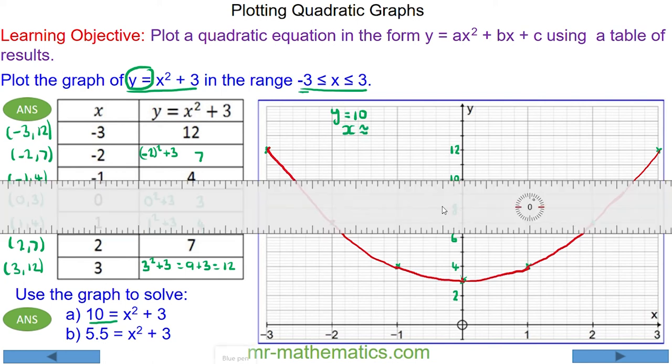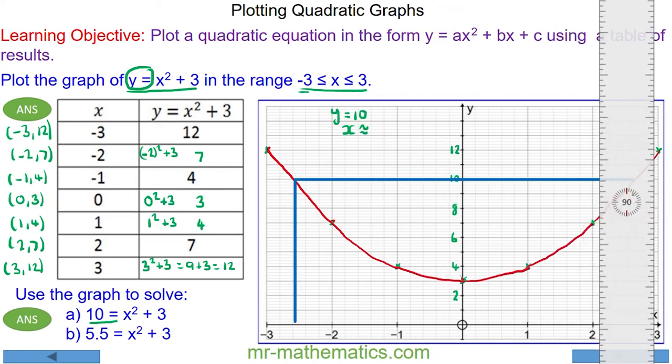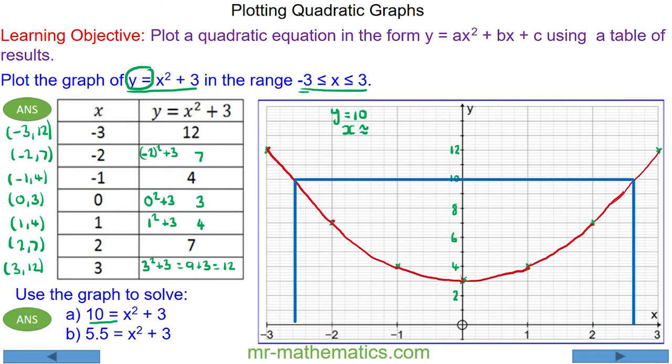And where it touches the curve, we'll draw two vertical lines down to the x-axis. And this tells us that when y equals 10, x is approximately negative 2.6 and positive 2.6. So the solutions to the equation are x is approximately equal to plus or minus 2.6.